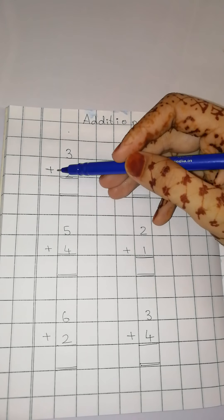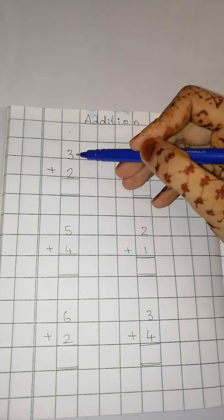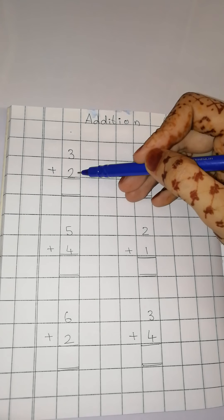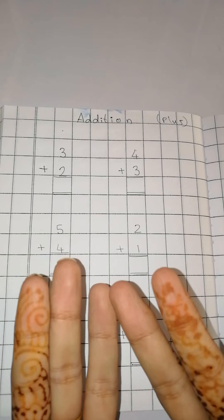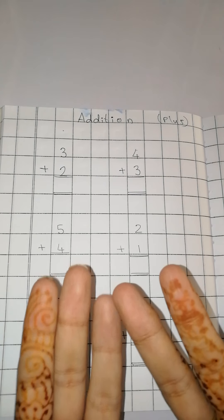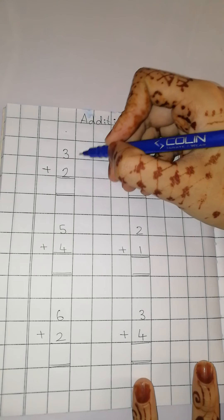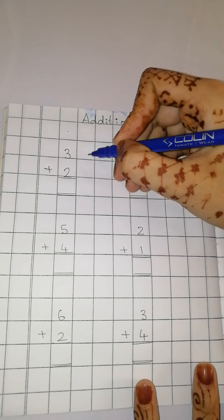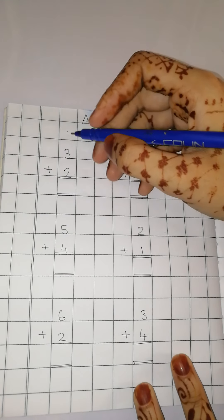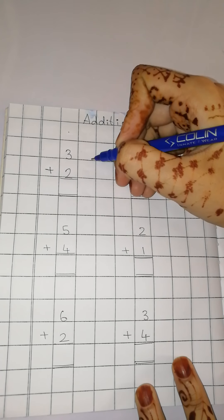And now we are going to plus or add number 3 and 2. 3 and 2 ko add karegay. Kaisay karegay? By this method. Now children, you can draw lines or you can do dots. For now, I am going to do standing lines.